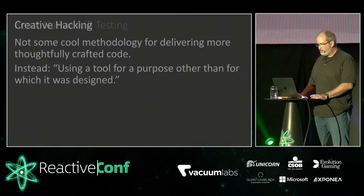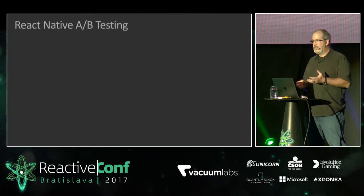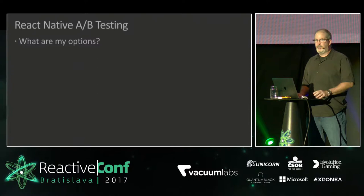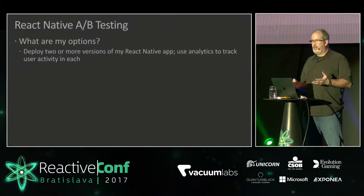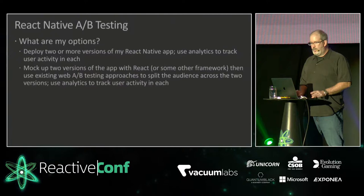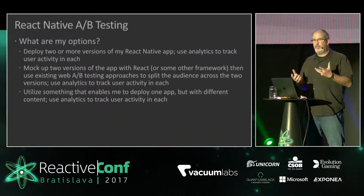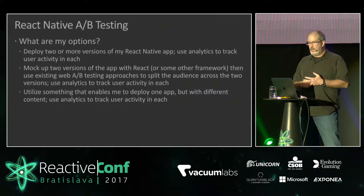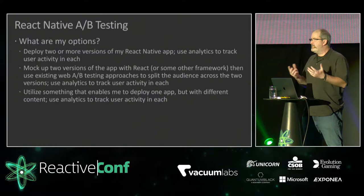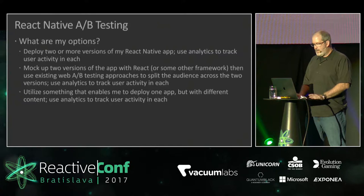The idea is to cover how to do A/B testing with React Native applications. If you think about that process, you've got a few options. First, you can deploy two or more versions of your app — but that's not a good approach. You could mock up two versions in React or a mockup tool. The third option — the one I like best — is to utilize some capability that lets you deploy one app with different content, then use analytics to track user interaction and decide which version wins.